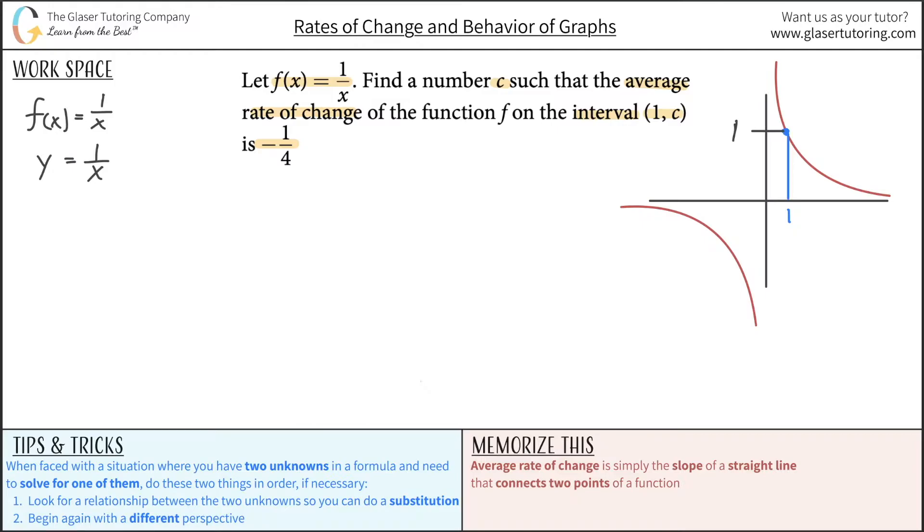Now that's one point and we're getting close. So now remember, we just have to find the average rate of change, which is a slope between two points on the graph. So we found one of them. Now we got to find the next one. Now this is the confusing part. The next point has an x value of c. What in the world does that even mean? Well, that means we don't know it. That's what we're trying to find.